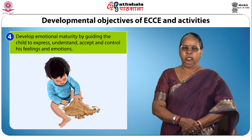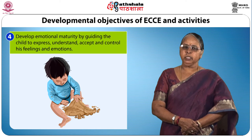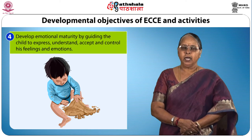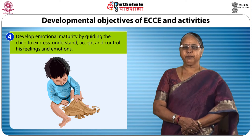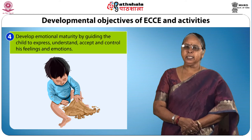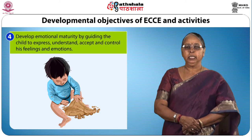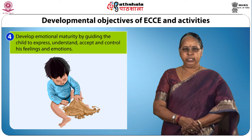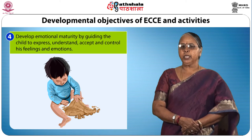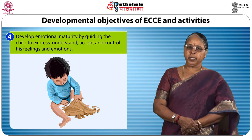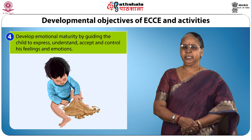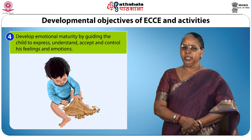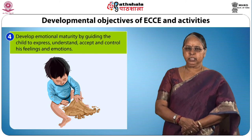The fourth objective is to develop emotional maturity by guiding the child to express, understand, accept and control his feelings and emotions. Emotions are essential parts of one's life — they are brief, intense and transitory. Some of the common emotions are love and affection, anger, fear, jealousy, aggression, anxiety and joy. Activities which promote this include gradual adjustment to school, opportunities to express positive and negative emotions in a healthy manner, and being able to recognize common emotional states like happy, sad or afraid, creating an atmosphere that breeds trust and security in the child.